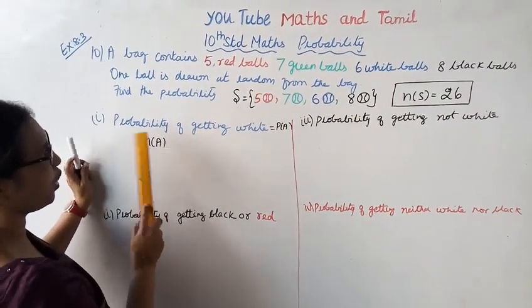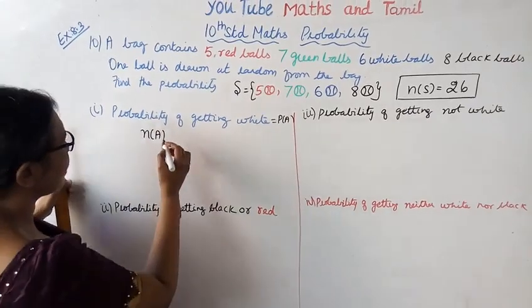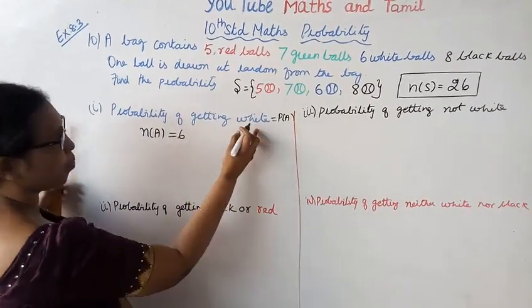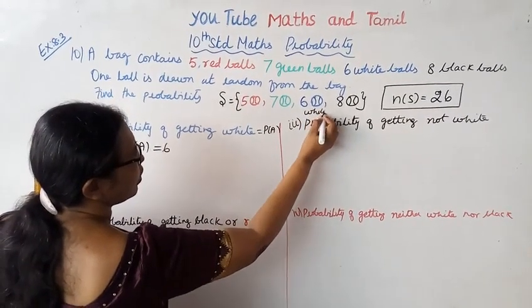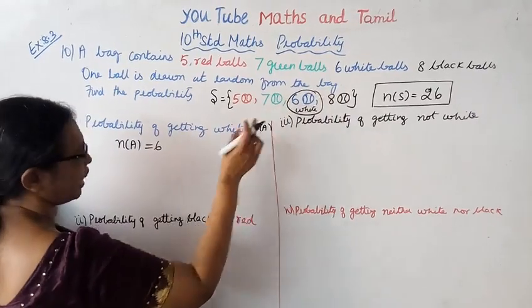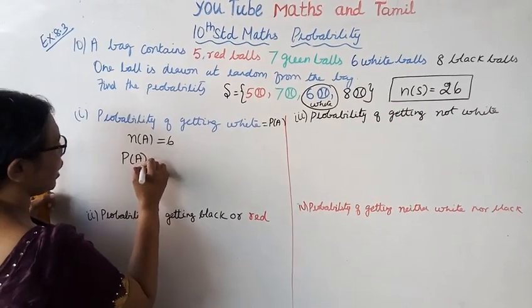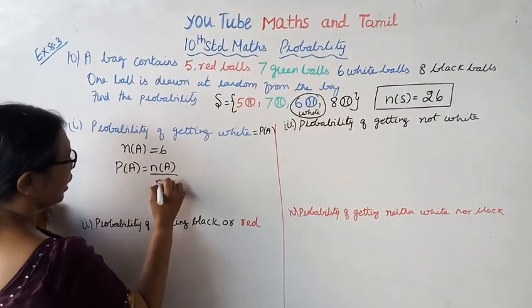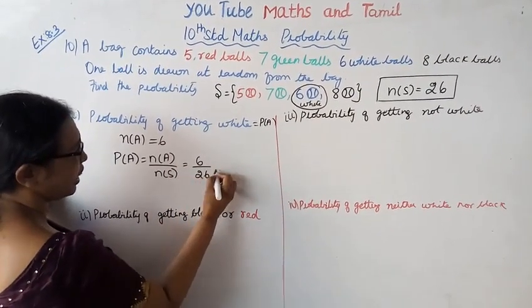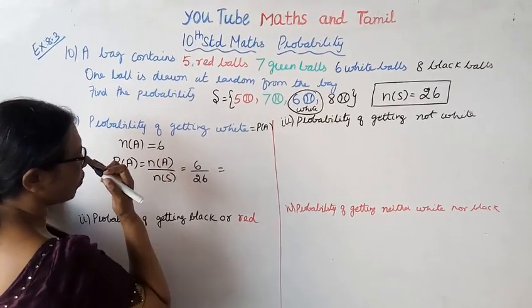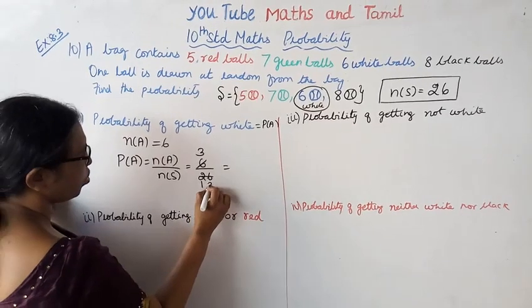Number of white balls equals 6. n(A) equals 6. Probability of A equals n(A) by n(S), which is 6 by 26. Simplifying: 2 threes are 6, 2 ones are 2, so this equals 3 by 13.